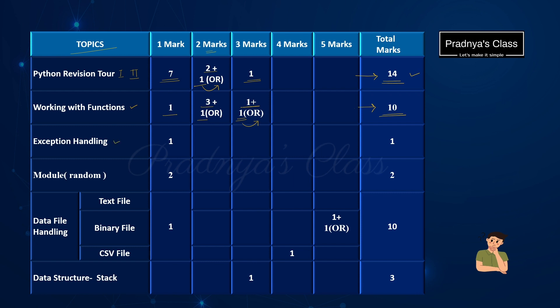It's time to check out the next topic that is Exception Handling. You will be getting one question for one mark, so the total weightage is one mark. Specific to the random module, there is one question for one mark. And for general module, there is one more question. So the total weightage is 2 for the module topic. The next topic is very important.